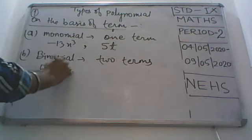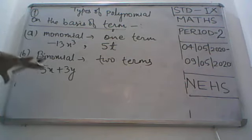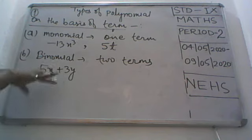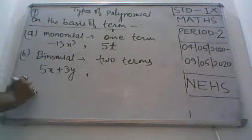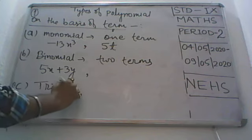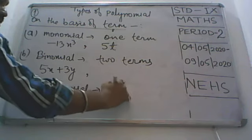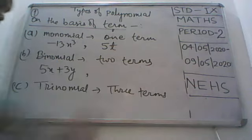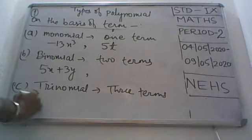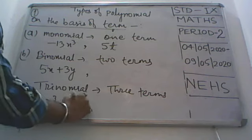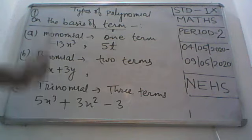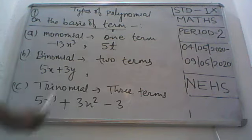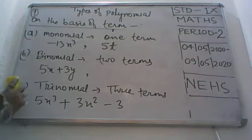For example, 5x plus 3y: if I ask on the basis of degree this is linear, but on the basis of terms it is binomial because we have term one and term two. Then we have trinomial — 'tri' means three terms. Example: 5x³ plus 3x² minus 3 has three terms. On the basis of degree it is cubic, but on the basis of terms it is trinomial.